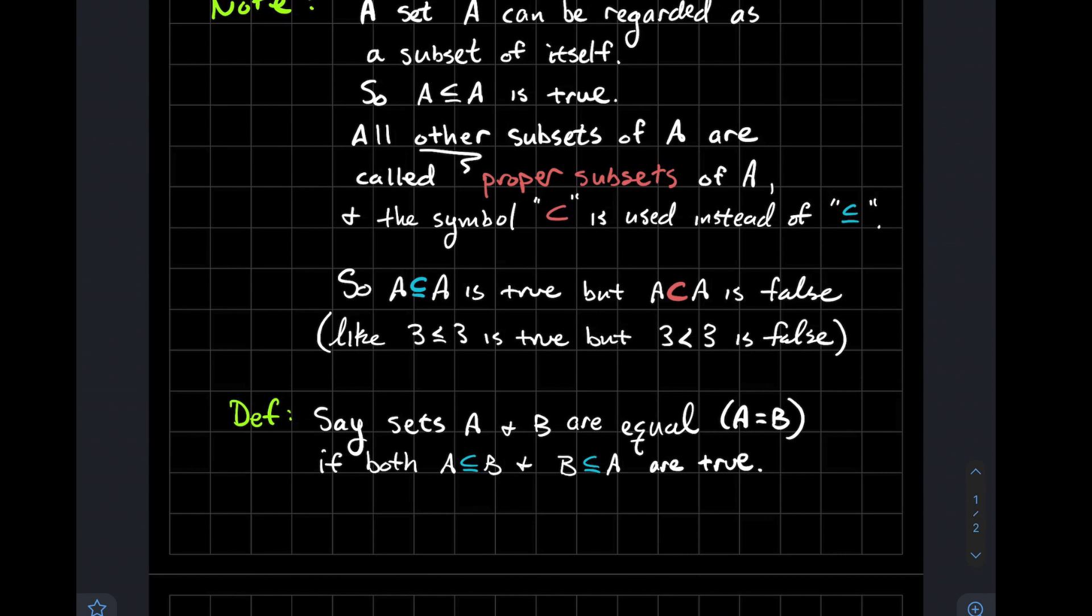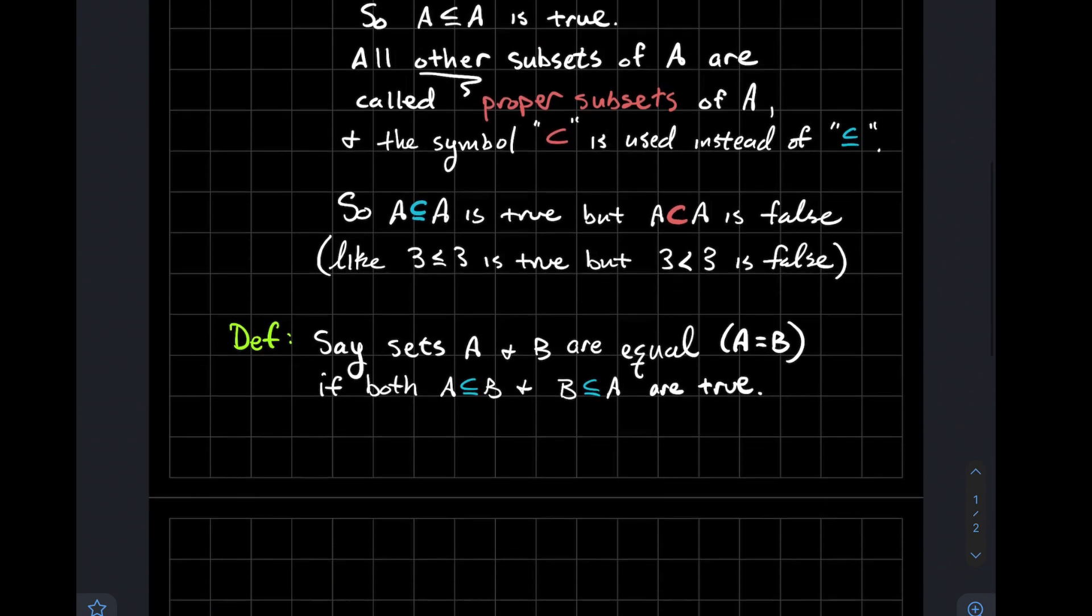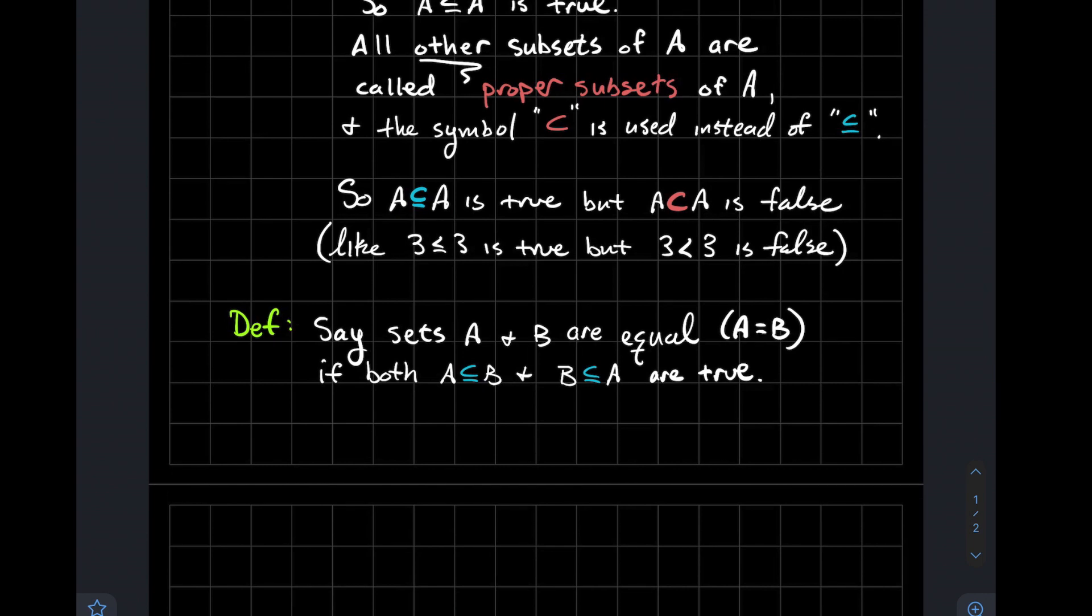So you'd need to show that A is a subset of B, and you need to show the other thing, which is that B is a subset of A. And that's what that second one says down there. So for A and B to be equal, you need both of them to be subsets of each other.